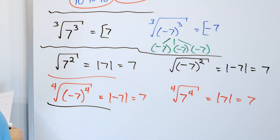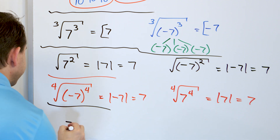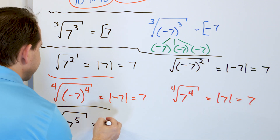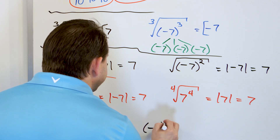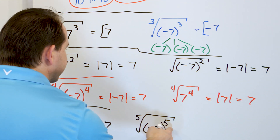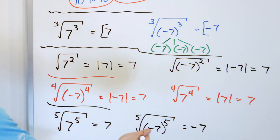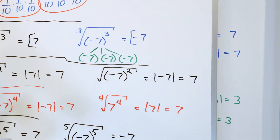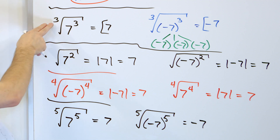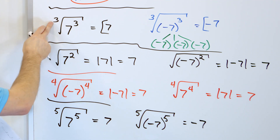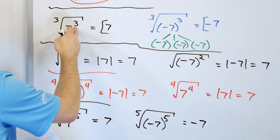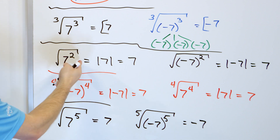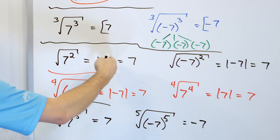To illustrate with odd powers: the fifth root of 7 to the fifth power — the fifth root cancels with the fifth power and you just get 7. The fifth root of negative 7 to the fifth power — the fifth root cancels, leaving negative 7. No absolute values, because when n is odd you just get what's left over. You can still get negative values coming out of odd-number roots, whereas when the root is even and canceling with an even power, you must take the absolute value.